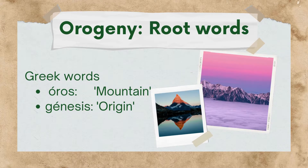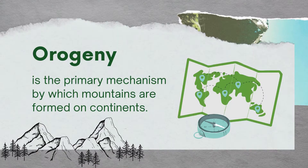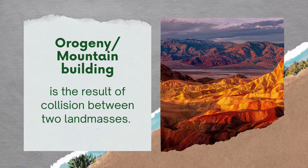The word Orogeny comes from ancient Greek 'oros,' which means mountain, and 'genesis,' which means creation or origin. Orogeny is the primary mechanism by which mountains are formed on continents. Orogeny, or mountain building, is the result of collision between two land masses.